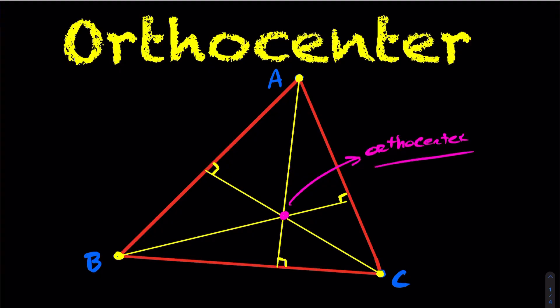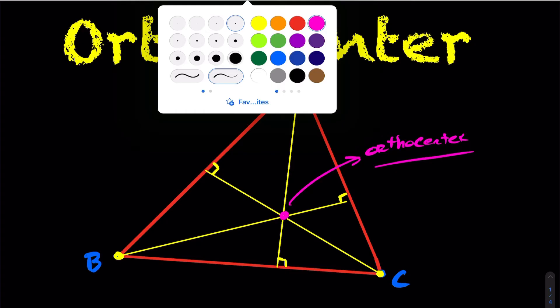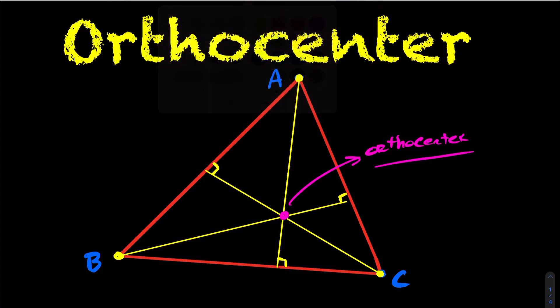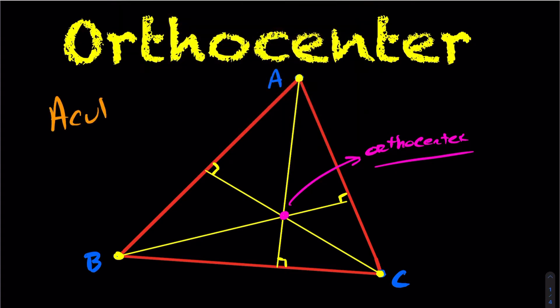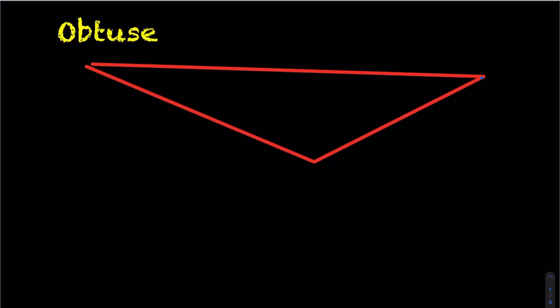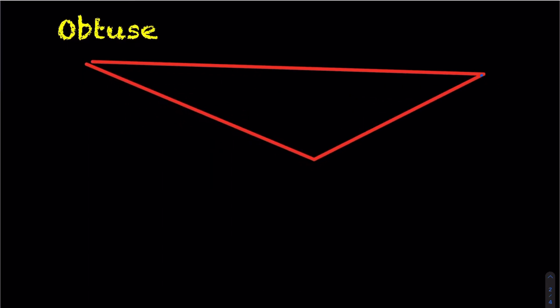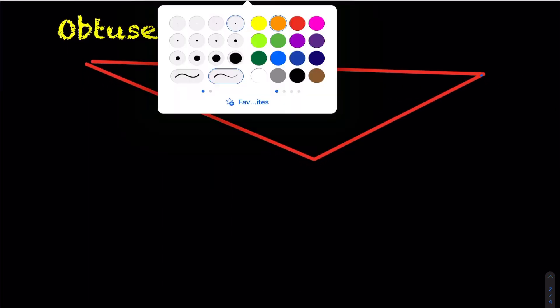One key piece of information: when you have an acute triangle, like the diagram here, your orthocenter is always located inside the triangle. Now let's take a look at how things would work if you had an obtuse triangle.